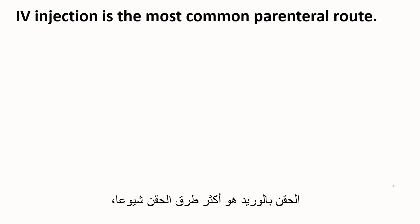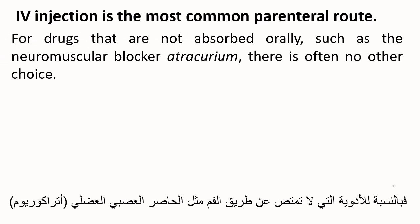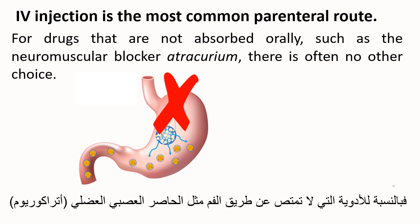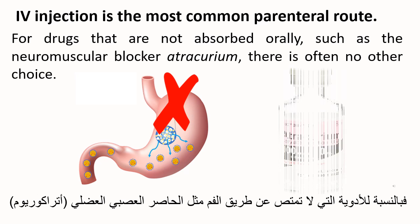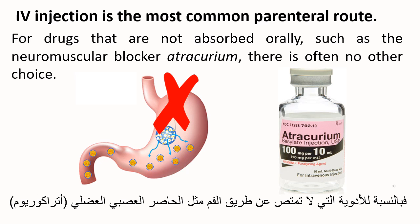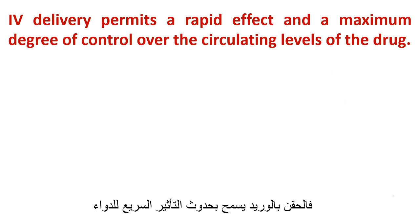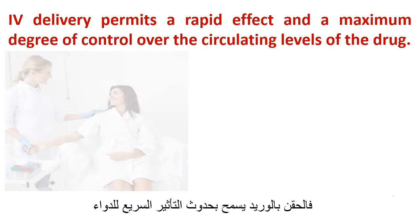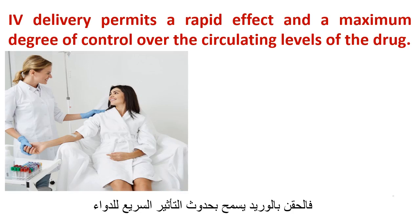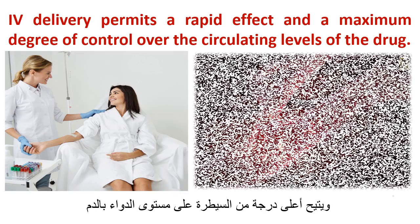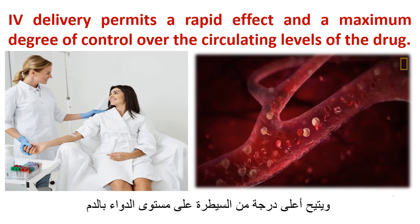IV injection is the most common parenteral route. For drugs that are not absorbed orally, such as the neuromuscular blocker atracurium, there is often no other choice. IV delivery permits a rapid effect and a maximum degree of control over the circulating levels of the drug.